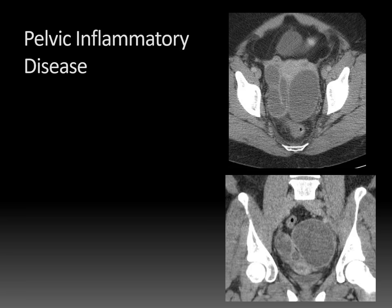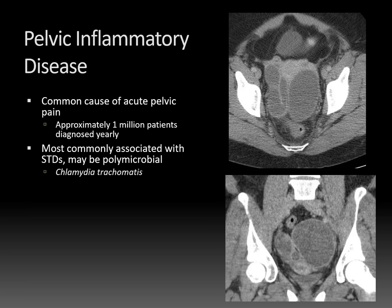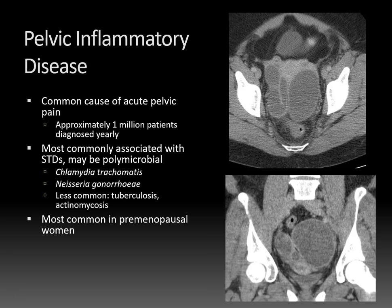Pelvic inflammatory disease is a common cause of acute pelvic pain. Approximately 1 million patients are diagnosed yearly, and most commonly this is associated with STDs and may be polymicrobial. The two most common offenders are Chlamydia trachomatis and Neisseria gonorrhea, but other less common etiologies such as tuberculosis and actinomycosis can also occur. Actinomycosis is an invasive organism that leads to a chronic suppurative infection, more commonly associated with patients that have an intrauterine device, and because it's so invasive in appearance, it can be difficult to differentiate from carcinomatosis.